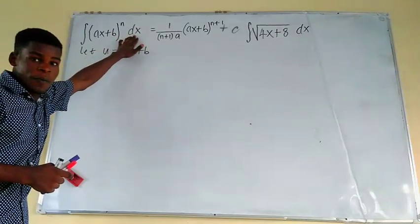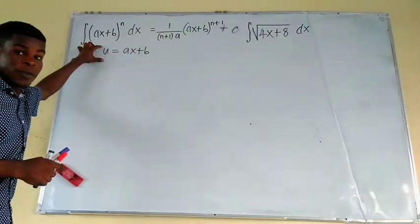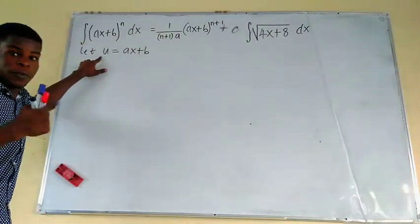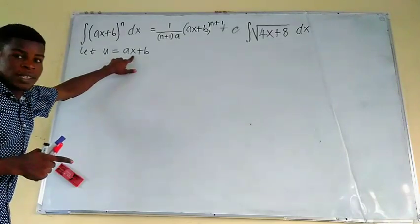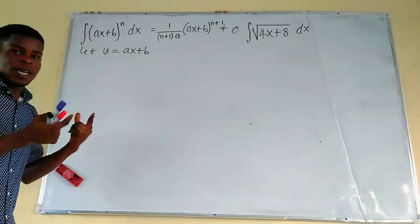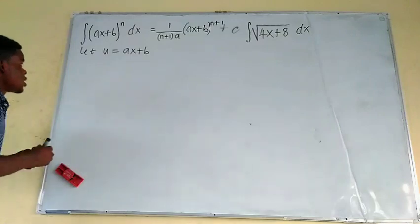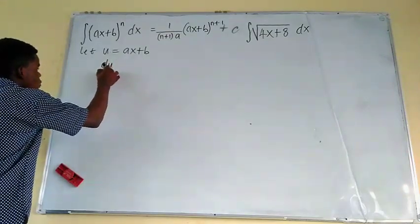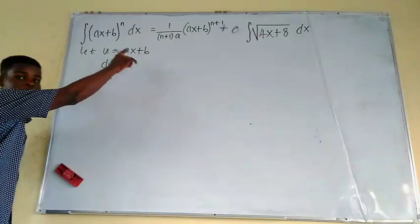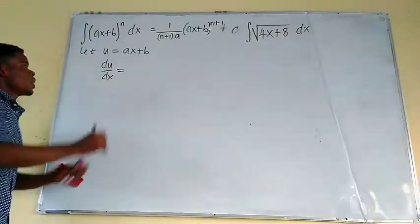But we are not yet done because this right here shows us that X is a variable of integration. So we need to change this DX to DU before we can actually complete the U substitution. So to get your DU, it's going to come from differential of the U. So if we differentiate the U with respect to X, we're going to get the DU.